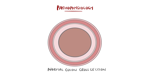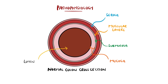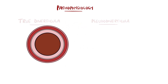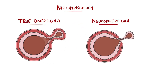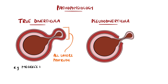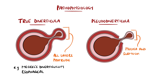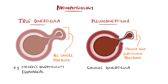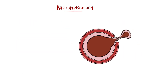They can happen anywhere along the gastrointestinal tract, but true diverticula are those in which all layers of the gastrointestinal tract protrude. Examples include Meckel's diverticulum and esophageal diverticula. Pseudodiverticula are where the mucosa and submucosa protrude through the muscular layers, such as in colonic diverticula, which are the most common, particularly in the sigmoid colon. These are the ones that we will be focusing on.